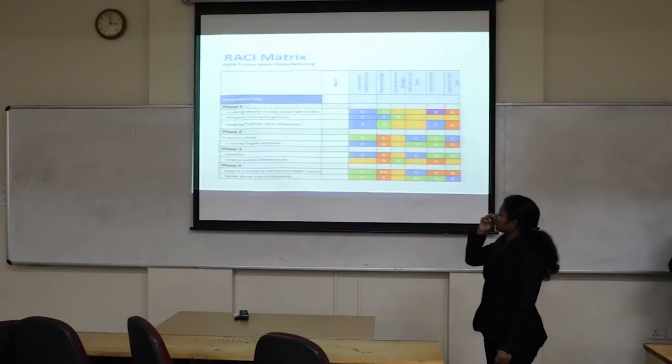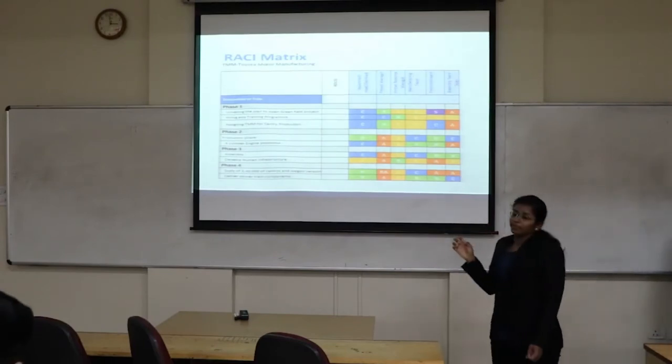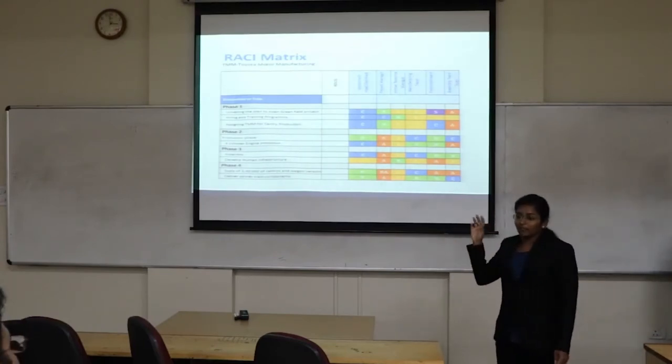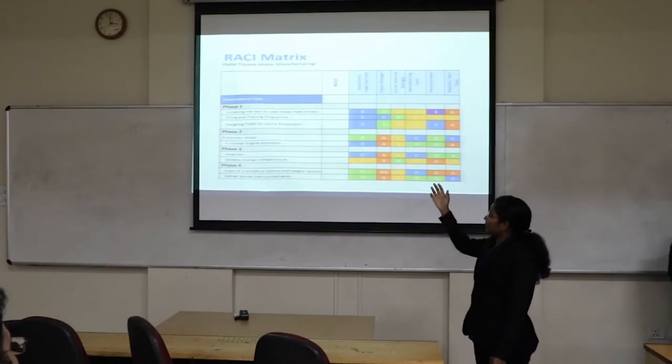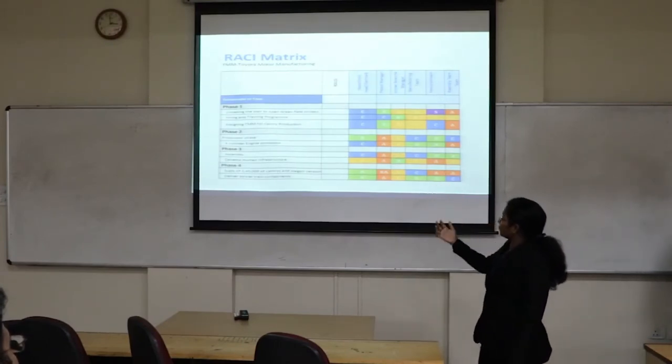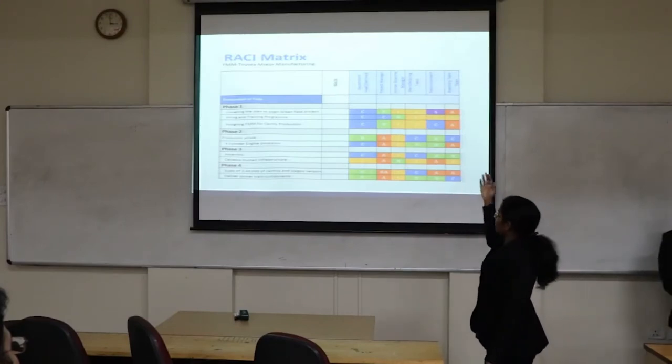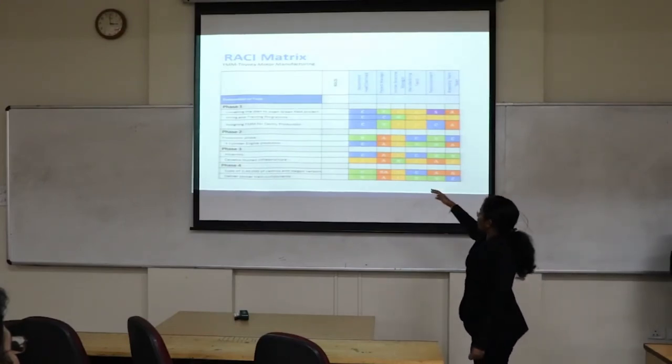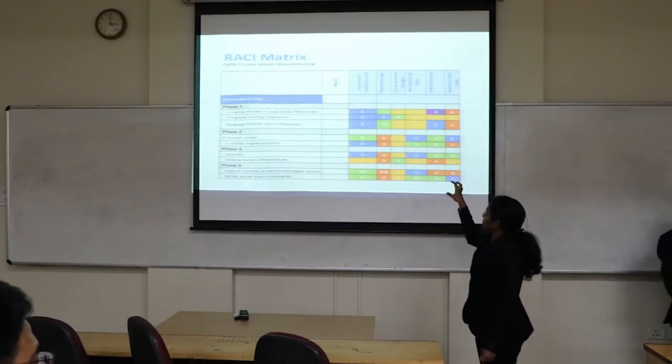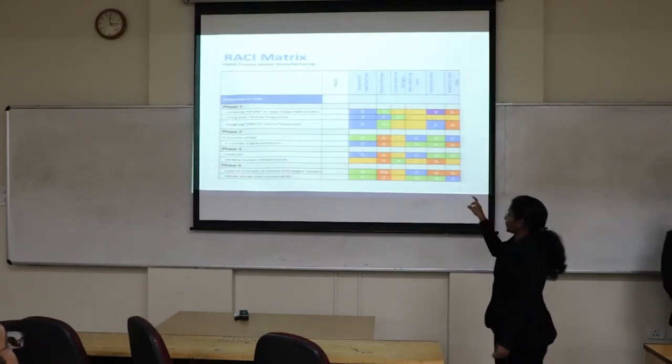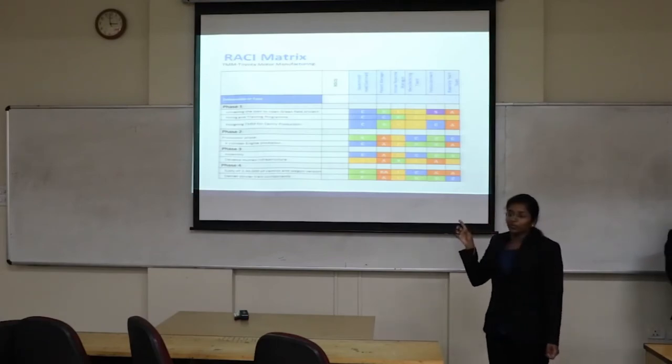Next comes RACI. Depending upon the milestones I have made this RACI. I have divided into phase 1, 2, 3 and 4. For those things, who is responsible, I have given the roles and accordingly I have pointed out who is responsible, who is consulted, who is informed and who is accountable for it.